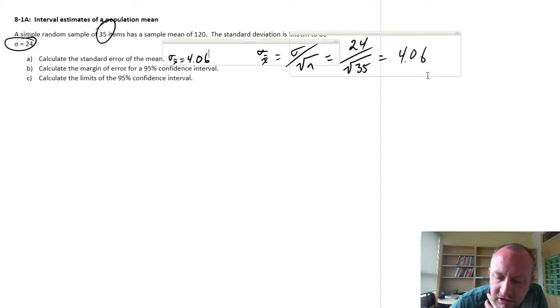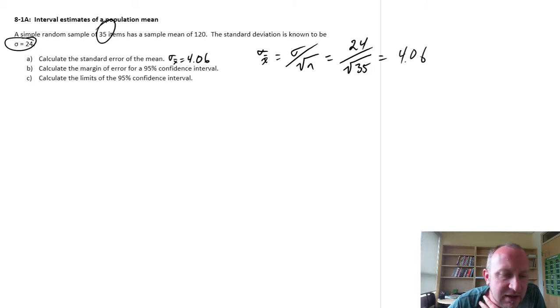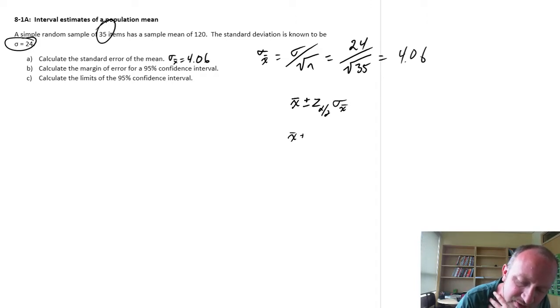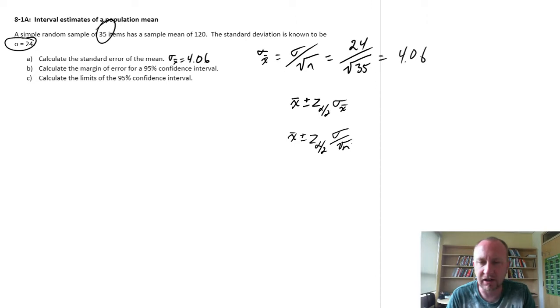Calculate the margin of error for a 95 percent confidence interval. So this is the margin of error if we're building up to a confidence interval. The formula that we're using here is this. And sometimes you'll see it written, or perhaps even more commonly, you'll see it written like this.